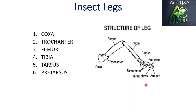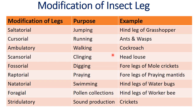Next is the pretarsus — these are the structures beyond the tarsus and have leg pads which are helpful in walking on smooth surfaces. Now the modifications of insect legs: saltatorial legs serve a jumping purpose, and the example is the hind legs of a grasshopper. Cursorial legs serve a running purpose — examples are ants and wasps. Ambulatory legs serve a walking purpose — example is the cockroach.